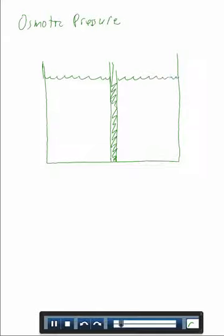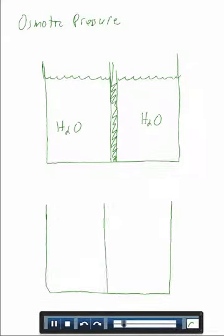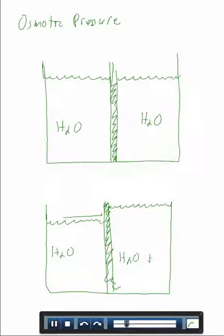So in the case where we have pure water on each side, the water level on each side of the container will be equal. Now what happens when we dissolve a solute in one side of the container? So now we have our container, we have in the middle our membrane and on the left side we'll have our water and on the right side we'll have water plus solute.